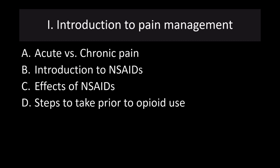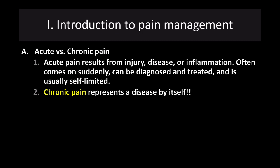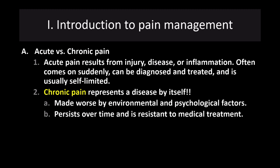First, we have to think about whether we're talking about acute pain or chronic pain. Acute pain results from injury, disease, or inflammation, generally comes on suddenly, and is usually self-limited — a short-term pain situation. Chronic pain, however, is a disease unto itself. It's a completely different pain management problem. Chronic pain is often made worse by environmental and psychological factors, persists over a long period of time, and is often resistant to medical treatment.